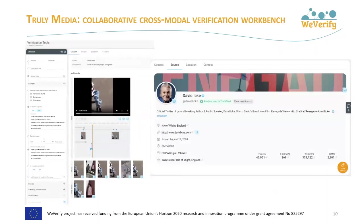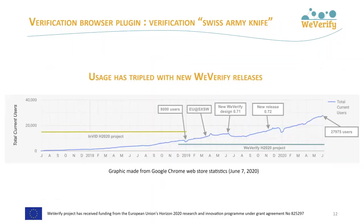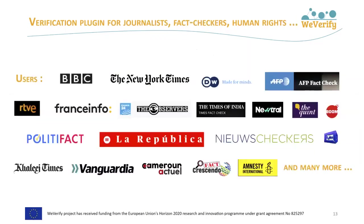This is where newly developed WeVerify features and outcomes will be included. The verification plugin, initially launched during the InVID H2020 project, is now maintained by partners AFP and CERT and improved with new tools from WeVerify. The plugin was redesigned and enhanced in WeVerify and released two new public versions in June and November 2019. Usage has more than tripled since the redesign, going from 8,000 to 28,000 users. It is regularly recommended by top fact-checkers, such as in the last edition of the Verification Handbook edited by Craig Silverman.